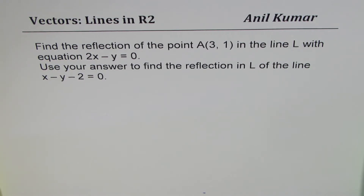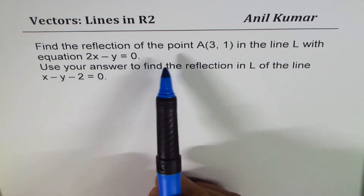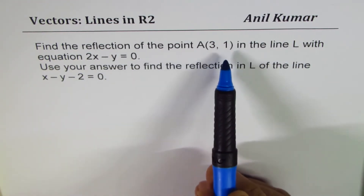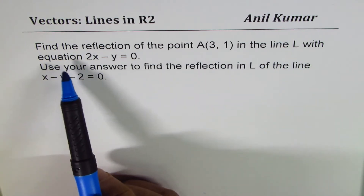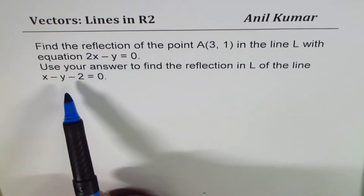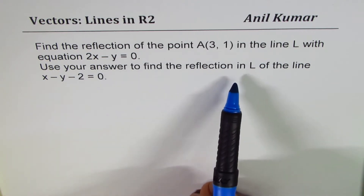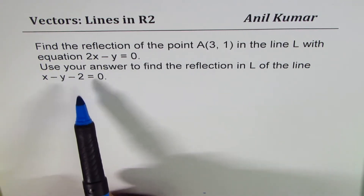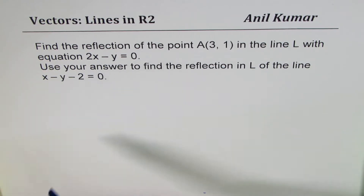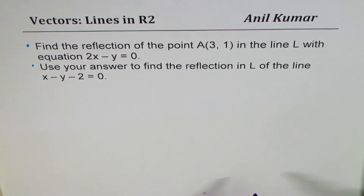This question is really very interesting. The question here is: find the reflection of the point A(3,1) in the line L with equation 2x minus y equals to 0. Use your answer to find the reflection in L of the line x minus y minus 2 equals to 0. So there are two parts to this.